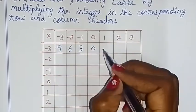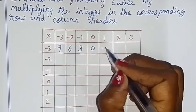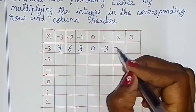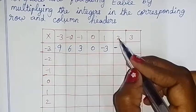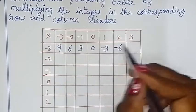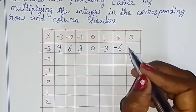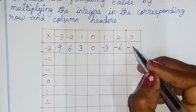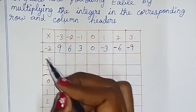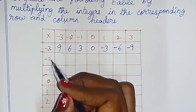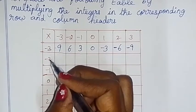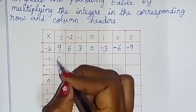Now, solve the number: minus 3 into 1 is minus 3. Here, minus 1 is minus. Numbers multiply 3, 2's are 6. But here, multiply 1 minus is minus 3. 3's are 9. Now, row in the column is minus 2 into minus 3. So, minus 2 is plus 3, 2's are 6.